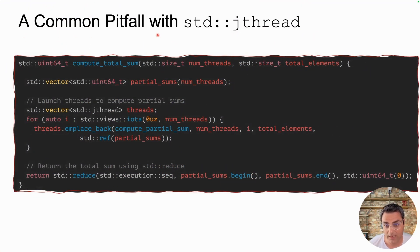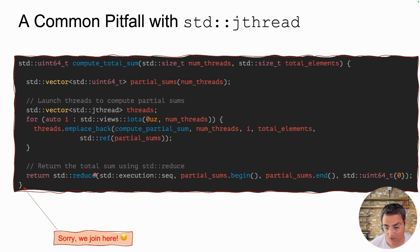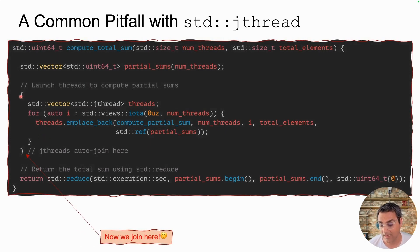Before I let you go, let's quickly review a common pitfall with std::jthread. Going back to the example of calculating the sum of a range of numbers — I create a vector of jthreads and push them into the threads vector. If you're not careful, you might mistakenly think that after the for loop it's safe to call std::reduce to calculate the total sum using the partial sums. But this will not work because these threads are not joined yet when you call std::reduce — they join at the end of the function when they go out of scope. What you should really do is put the whole for loop inside curly braces so that at the end of that block the threads are all joined, and then it's safe to use the results. Always use the results of threads once they are out of scope and have joined.